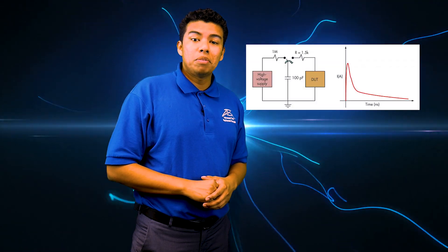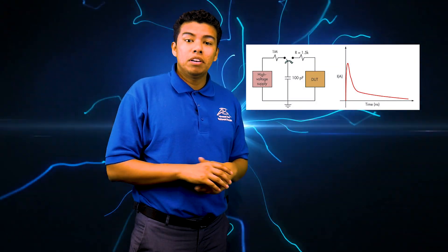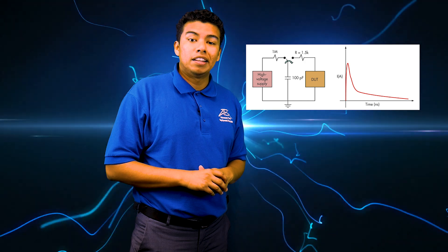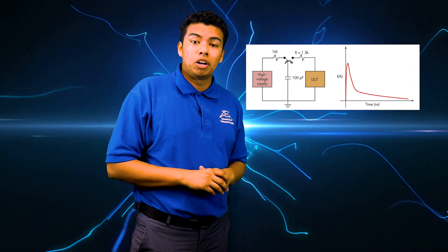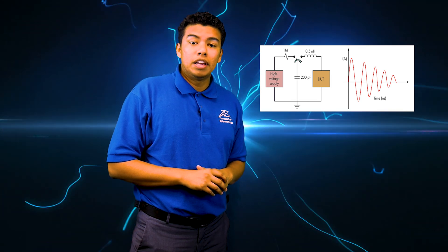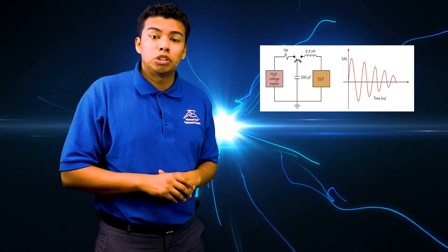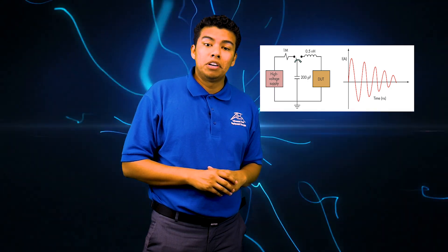The charge device model simulates situations that may happen in manufacturing environments. The human body model creates an environment of a human body discharging static electricity and then monitors how the device under test responds. The machine model testing examines how the device under test responds to electrostatic discharge from another nearby device.